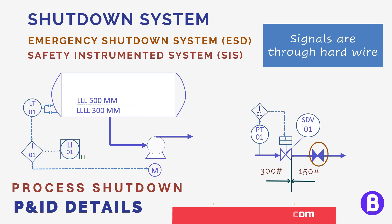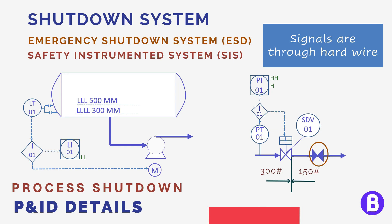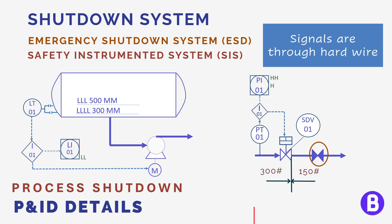Here the pressure transmitter shall send a signal through hardwire to the shutdown system, and through interlock logic, if the reading of the pressure reaches the shutdown pressure — which is the high-high pressure here — a signal shall be sent to close the shutdown valve. Now the low pressure system won't be subject to overpressure, as the shutdown valve is closed and there is no flow from the high pressure system to the low pressure system.